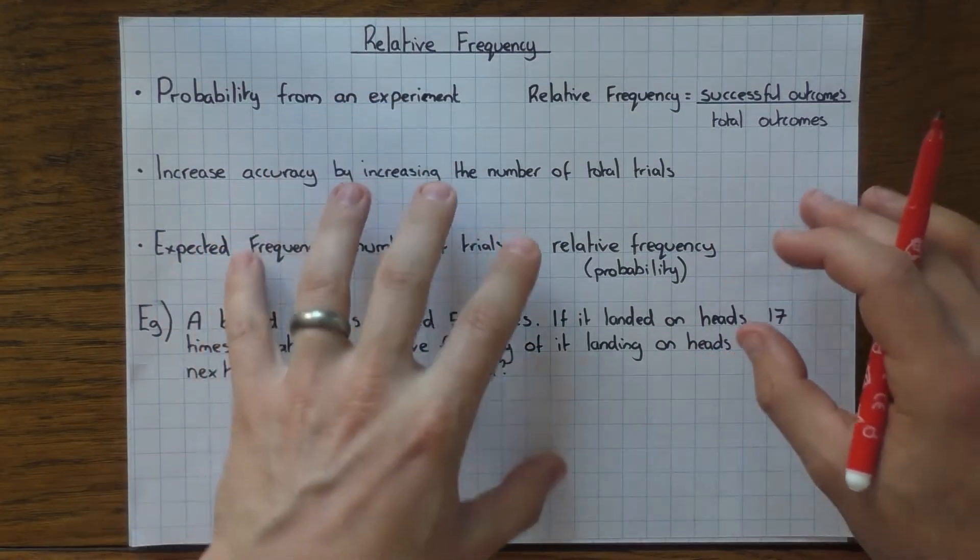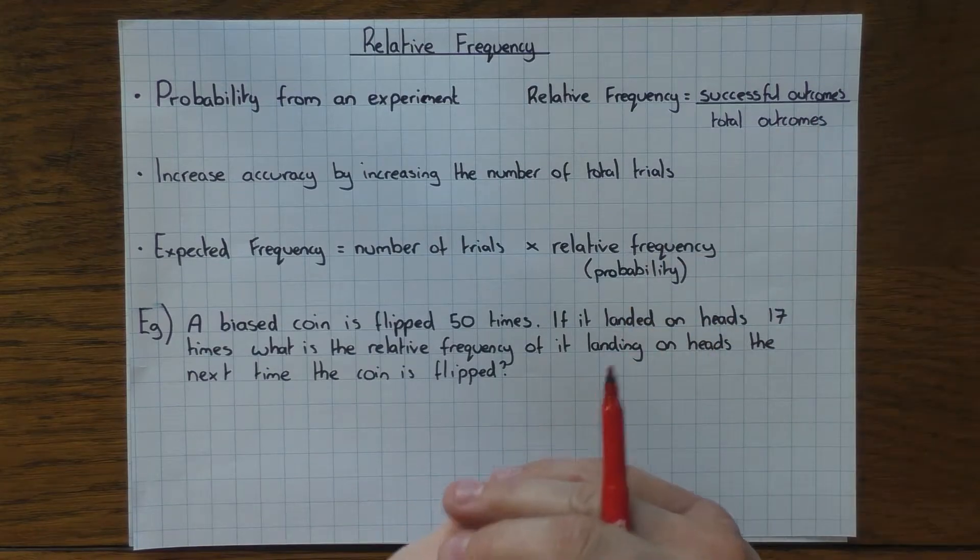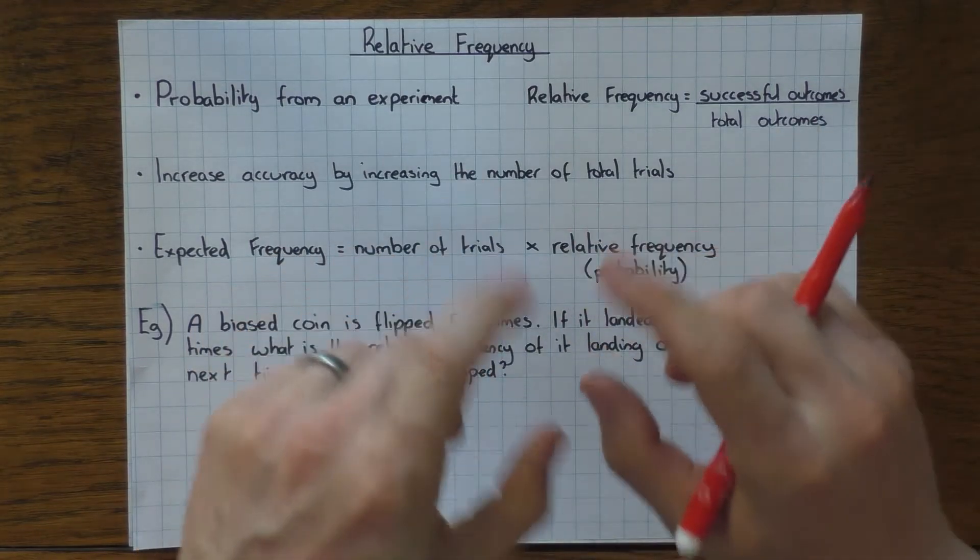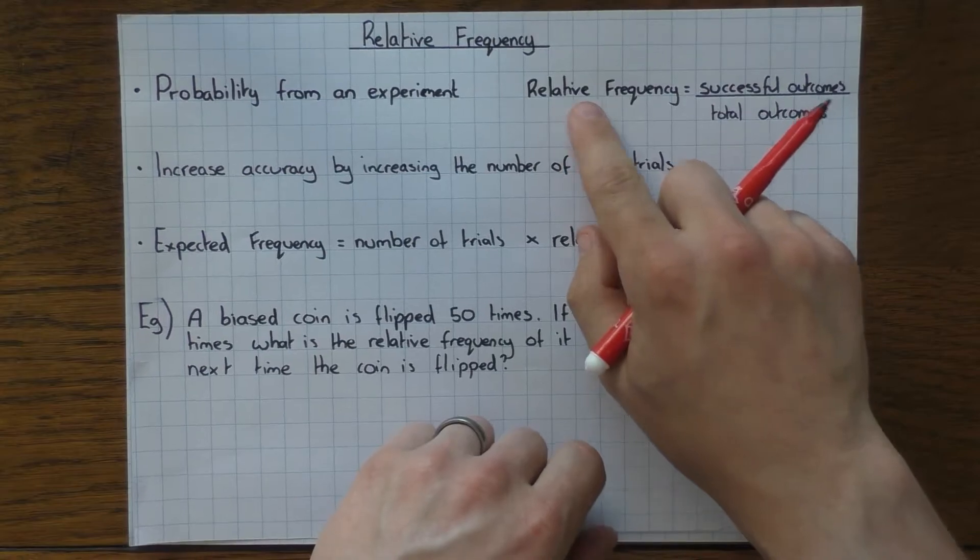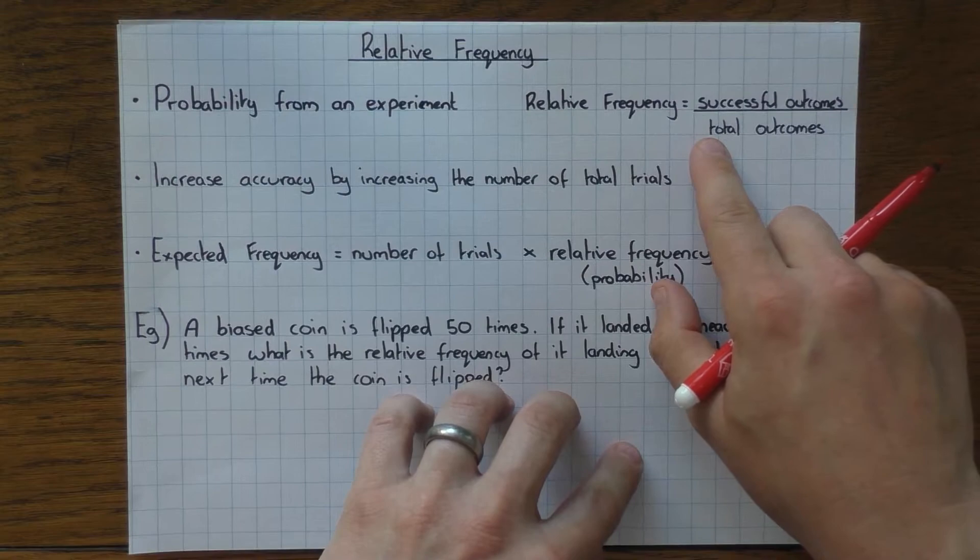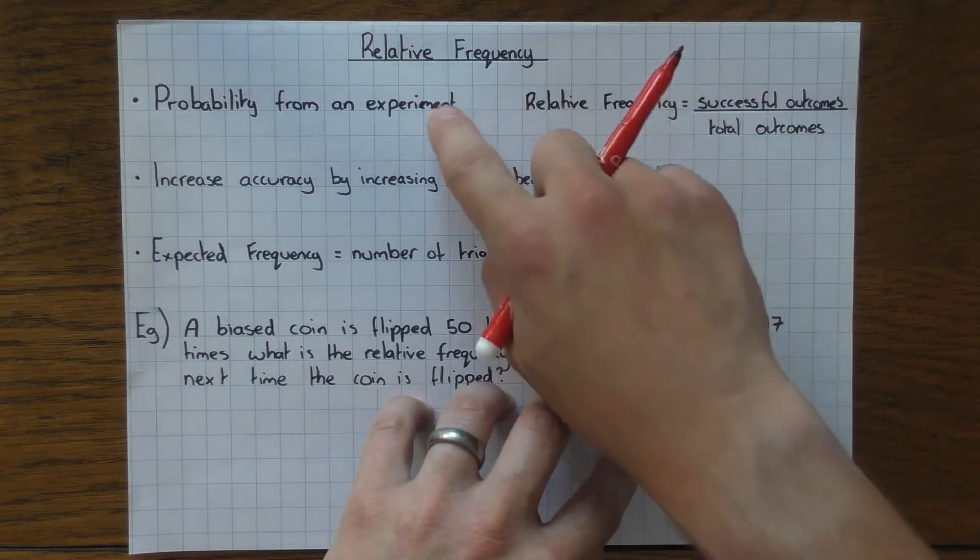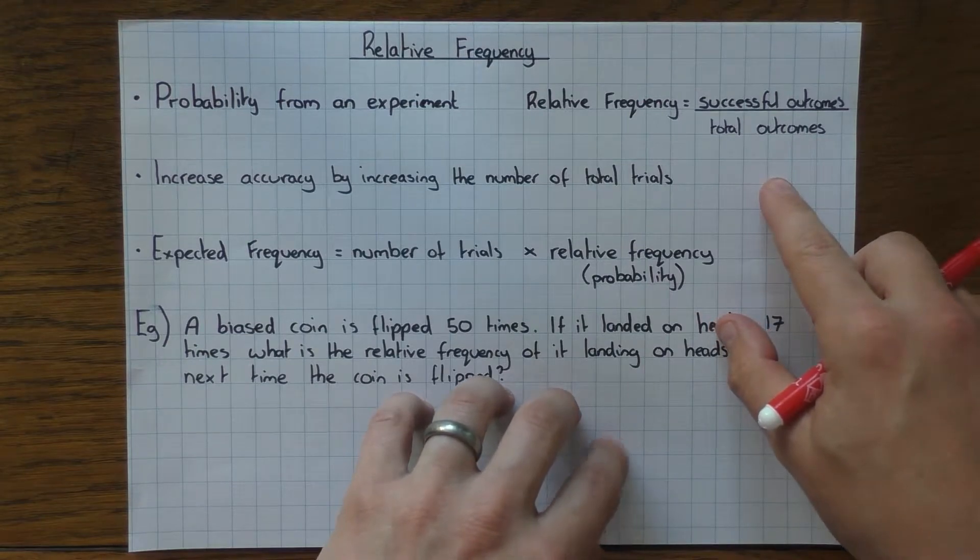So what we do is we do an experiment—we try it 10 times, for example, and then we'd say okay, if it lands upright three times, we'd say the relative frequency would be 3 over 10 because it was successful three times and we did it a total of 10 times. So it's just a way of working out the probability from an experiment.